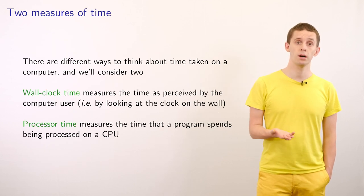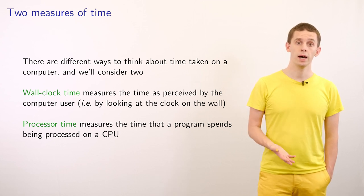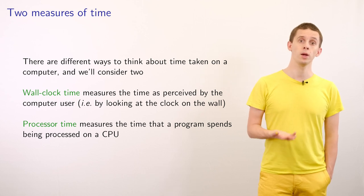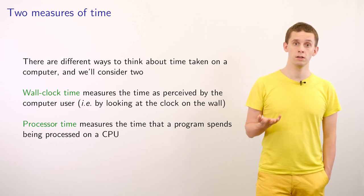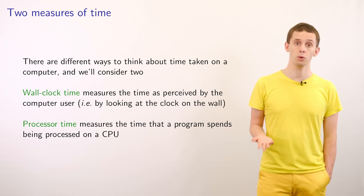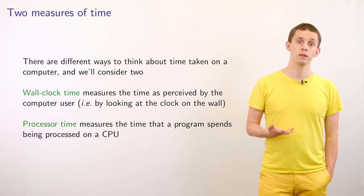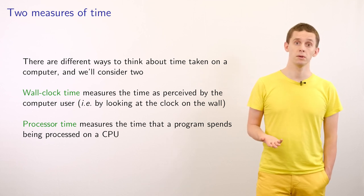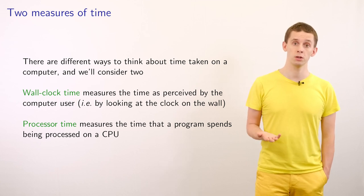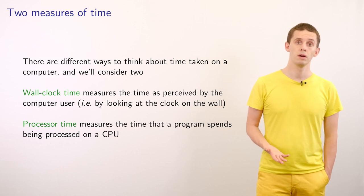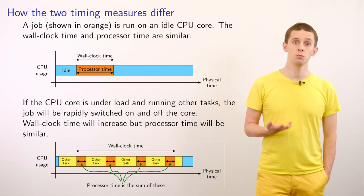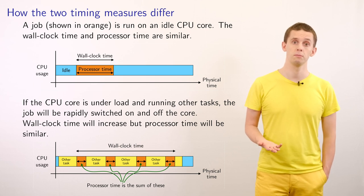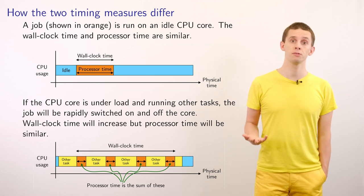There are several subtleties about timing how long it takes for a program to run on a computer. To illustrate this, let's introduce two different ways that we can think about time. The first is wall clock time, defined in terms of the passage of time that you as a programmer experience — it's the time you would see if you were looking at the clock on the wall. Now suppose you had a program expected to take 10 seconds and you run this on a computer that had nothing else running on it. Then the wall clock time works out to be roughly 10 seconds.